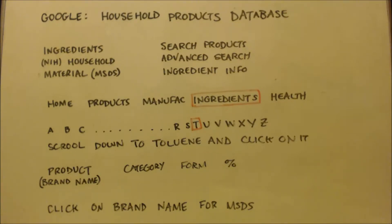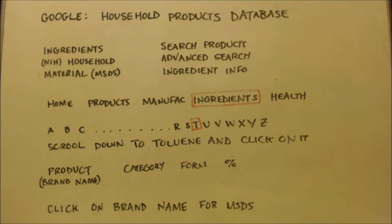My buddy's looking for toluene, so let's say we're looking for toluene. I click on 'T,' scroll down to where it says toluene, and click on it. The next thing they'll show you is a list of products.